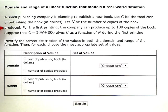For the first printing, the company can produce up to 100 copies of the book. Suppose that C equals 20N plus 800 gives C as a function of N during the first printing.